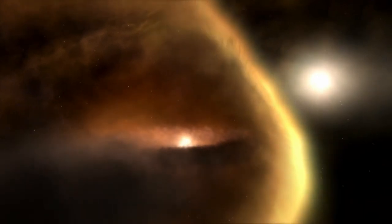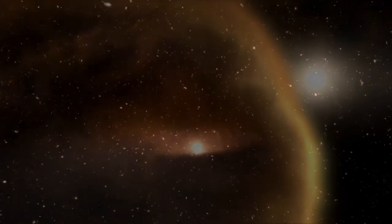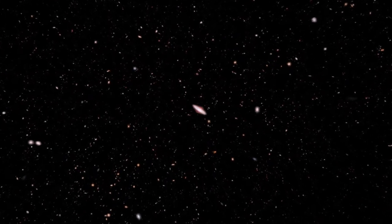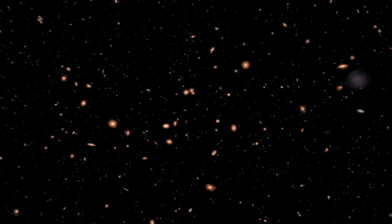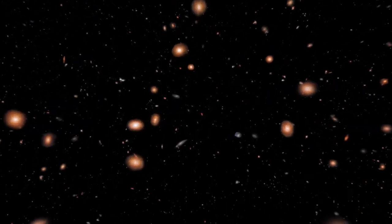But Webb will do more than help us understand how our planet came to be. Astronomers now think that most of the stars in the galaxy have planets around them. We can't possibly measure or detect all of those planets, but by understanding how they form, we can begin to predict the diversity of planets out there, including how many Earths we can expect to find orbiting other stars.